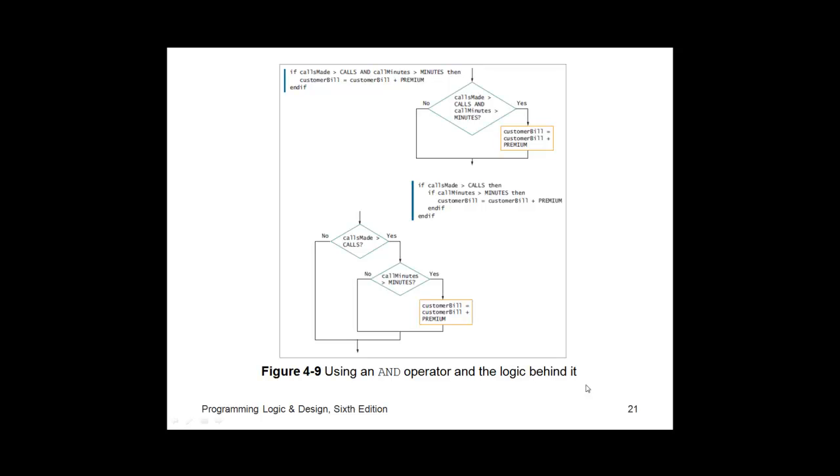Again, figure 4-9, again, you might want to refer to your book. This shows flowcharts and pseudocode for both nested. See, here's that nested example. We saw this earlier, where the number of minutes is nested inside the calls made logic. If you were to use the compound expressions within your language, you would actually have just one decision structure, and your diamond asks both questions, and if this decision evaluates to true, then we add the $20. Here's that logic written in pseudocode with the AND operator comparing two separate expressions. If it's true, then we add the $20 to the bill.